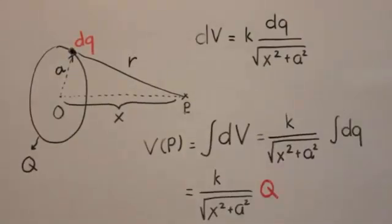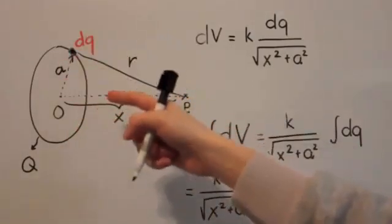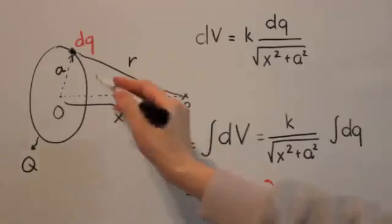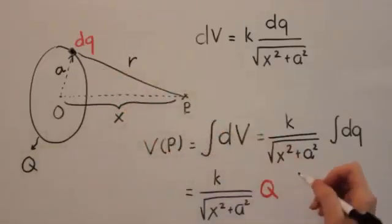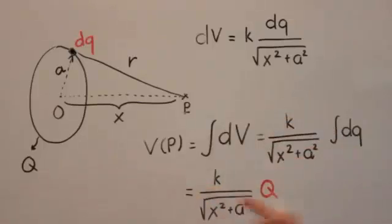And write down k over square root of x squared plus a squared times the integral of dq. Now, the final step is simple. When we integrate all over the infinitesimal charges dq, we get the total charge of the ring, which is the big Q.